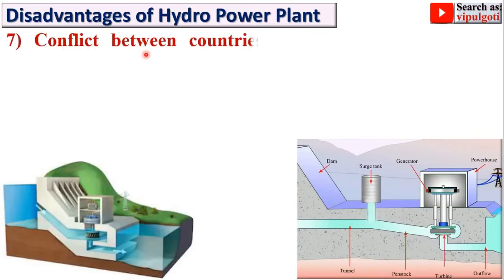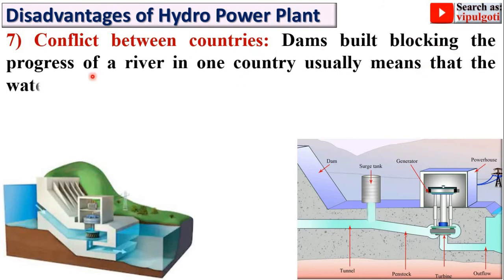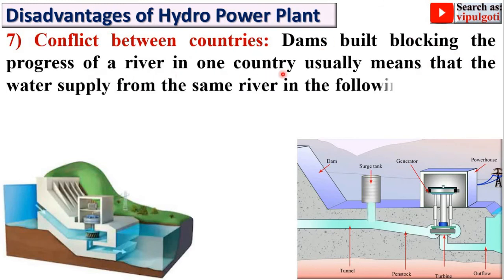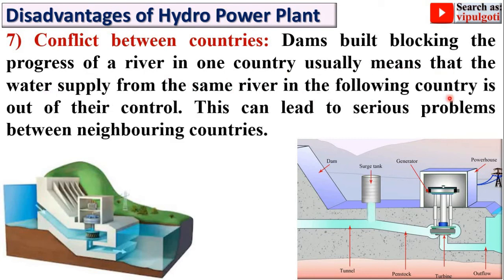Next: Conflict between countries. Dams built blocking the progress of a river in one country usually means that the water supply from the same river in the neighboring country is out of their control. This can lead to serious problems between neighboring countries, particularly when a river passes through two countries.